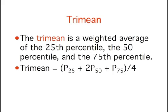The first measure is called the tri-mean. It is a weighted average of the 25th percentile, the 50th percentile, and the 75th percentile.